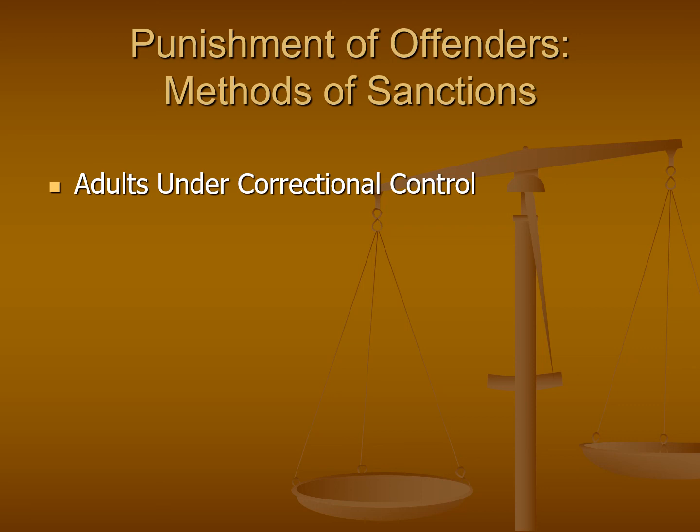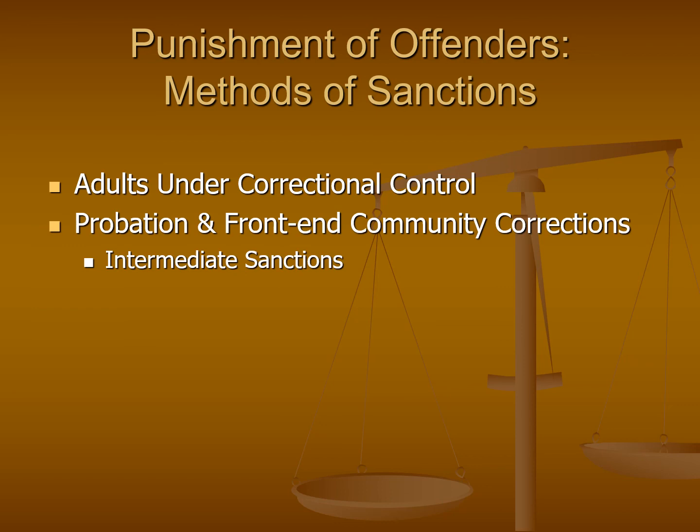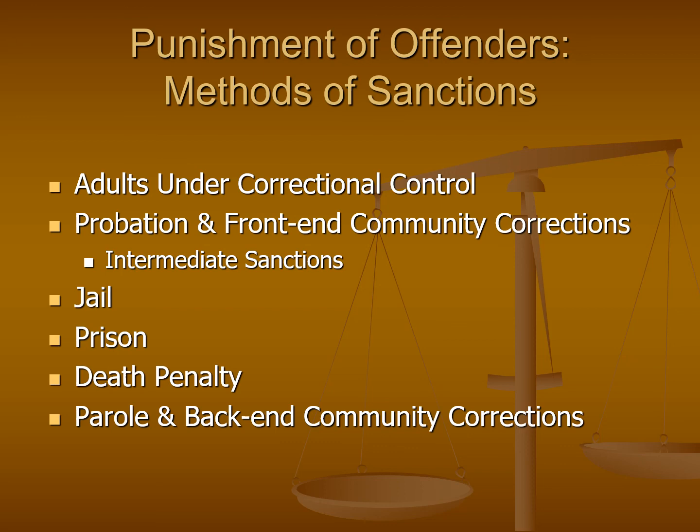Welcome back everyone. In this lecture we're going to take a look at the various types of punishment for offenders that are often used within the correctional system. Before we go through each of the major types of punishment, we're going to take a brief look at the number of adults under correctional control in the United States, both currently as well as historically, so we can see some of the changes and trends over time.